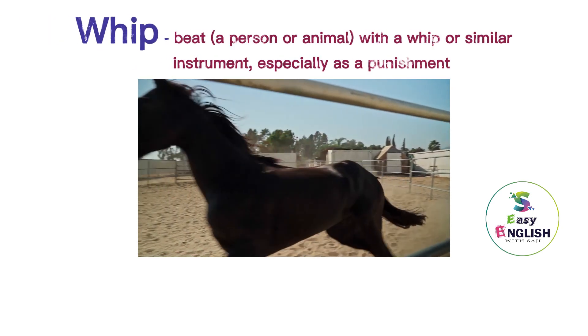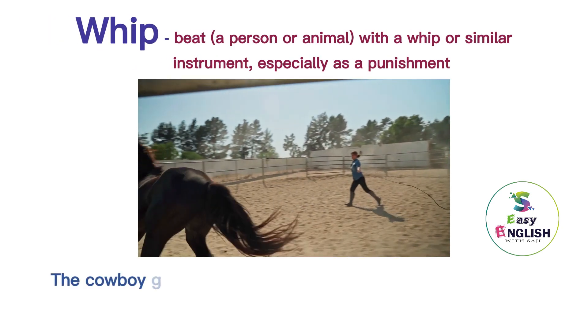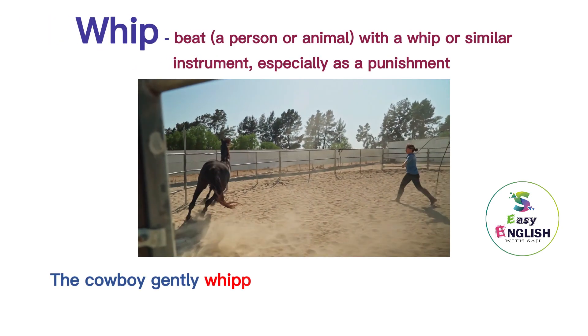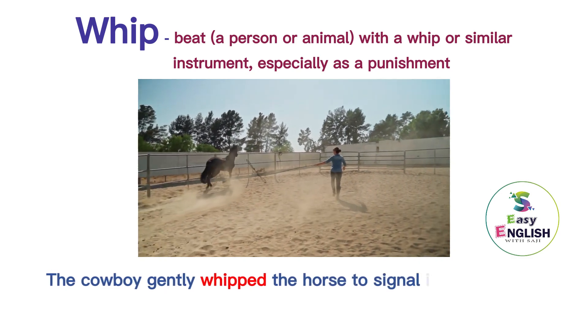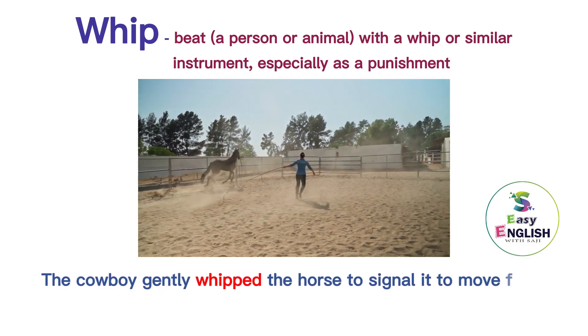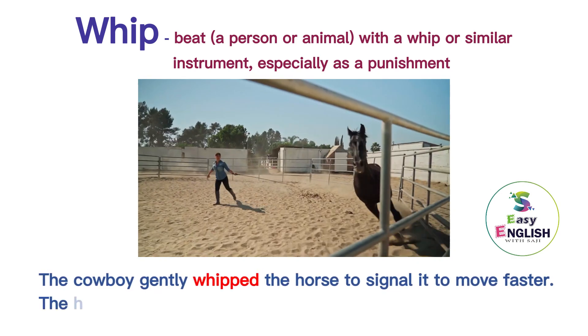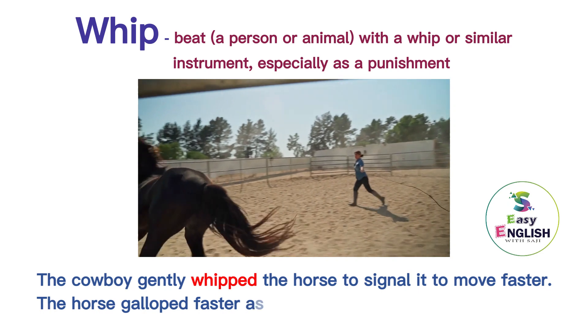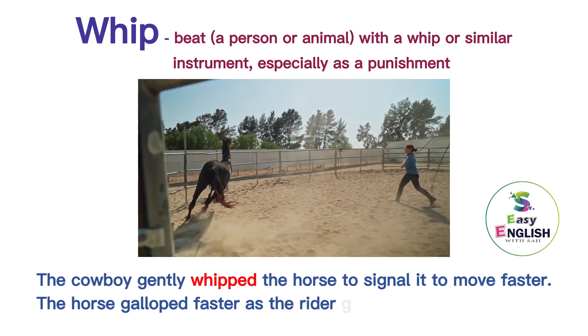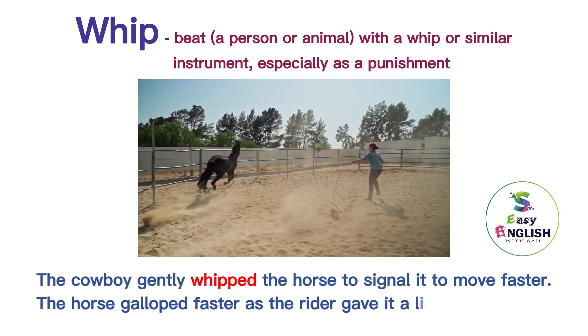Whip. The cowboy gently whipped the horse to signal it to move faster. The horse galloped faster as the rider gave it a light whip.